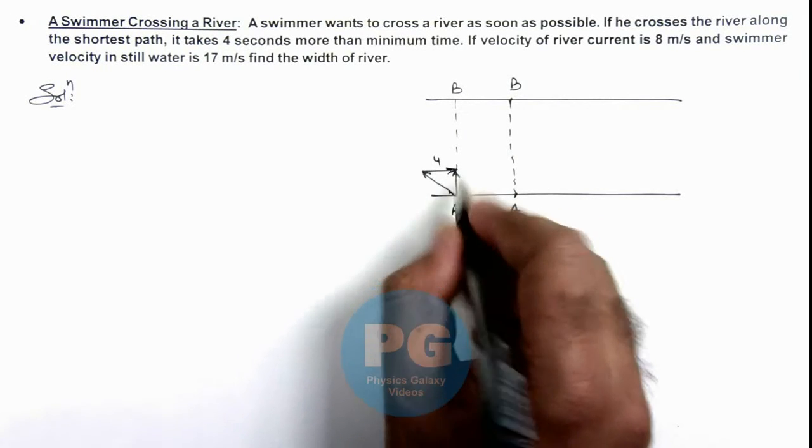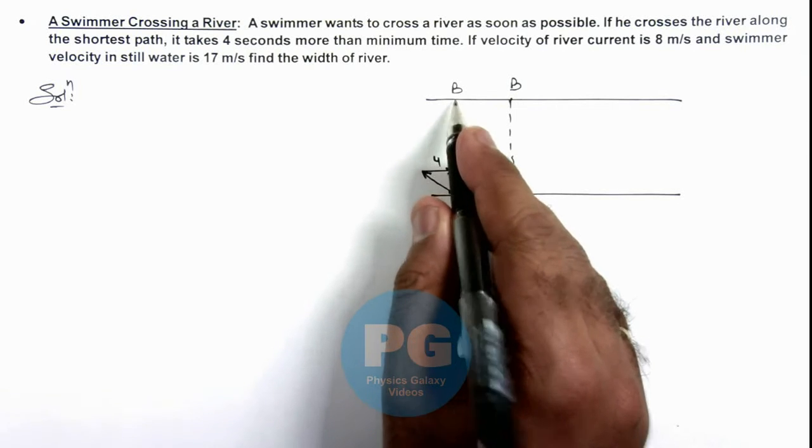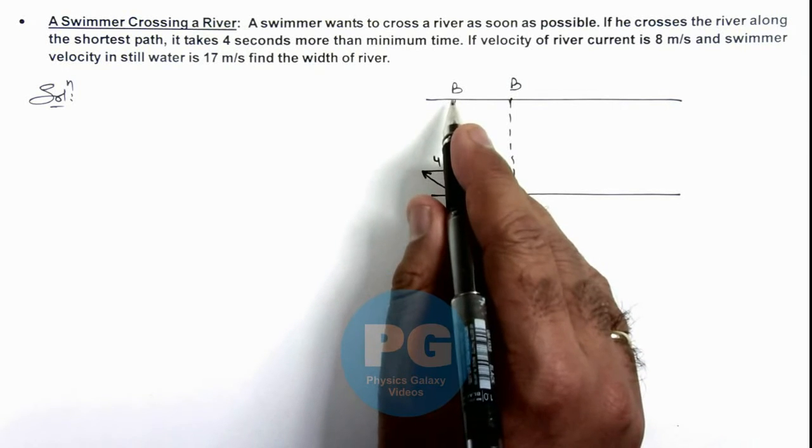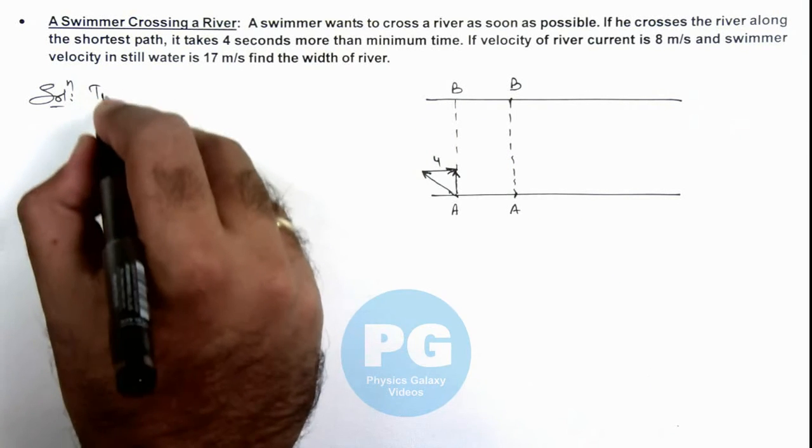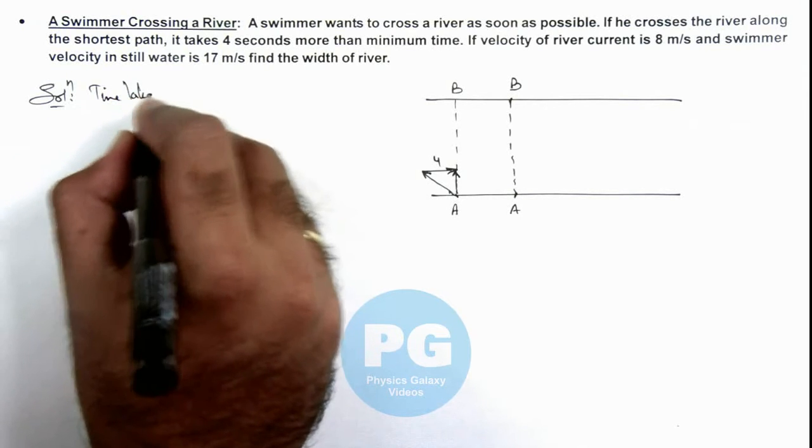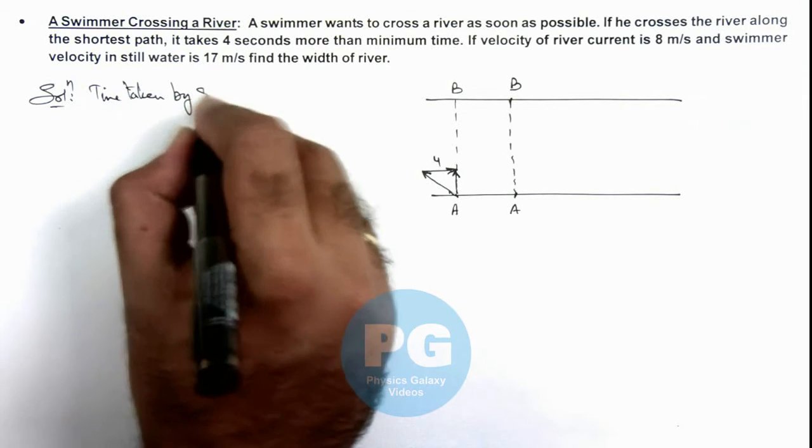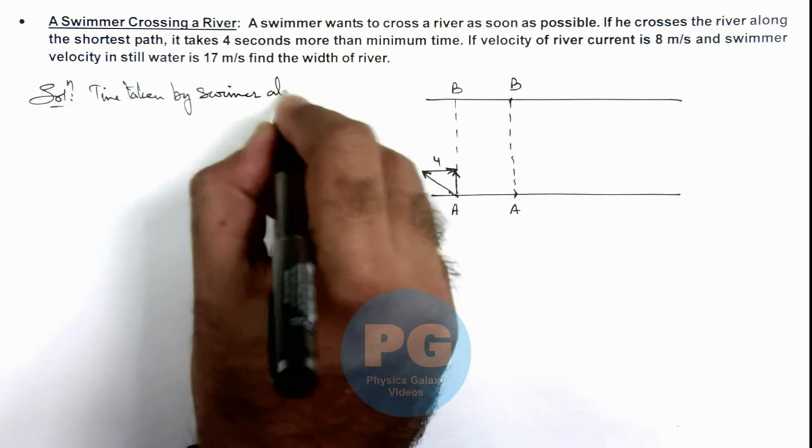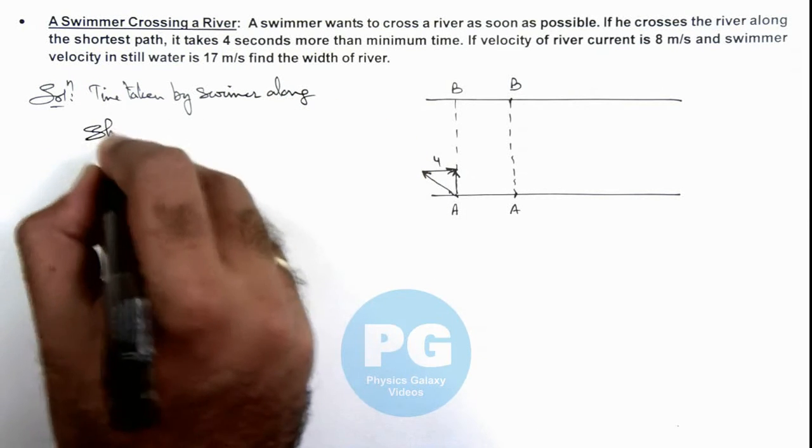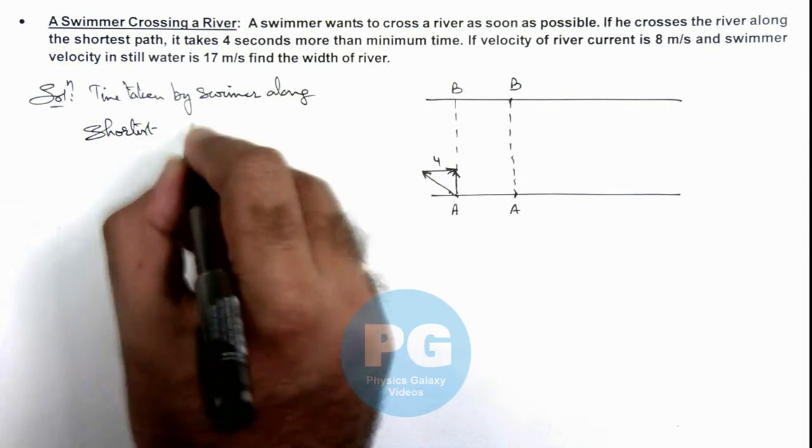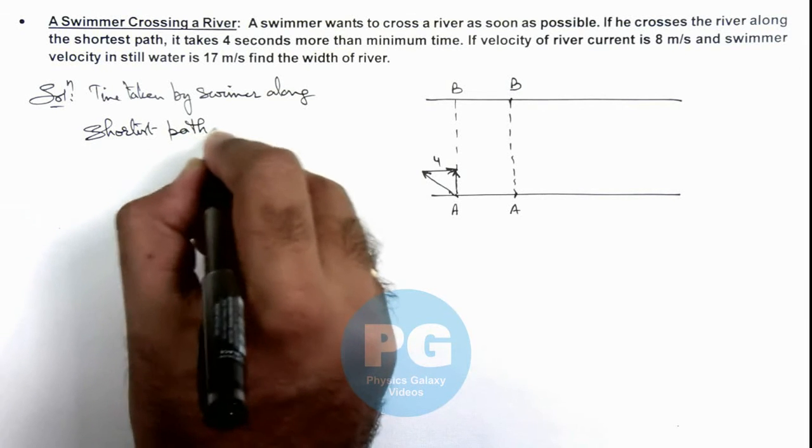So this is the time taken when he is crossing along the shortest path. So we can write time taken by swimmer along shortest path is.